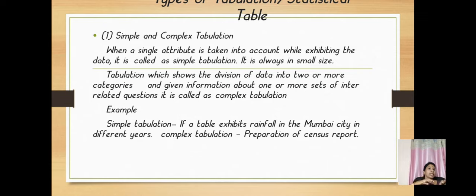Tabulation which shows the division of data into two or more categories and gives information about one or more set of interrelated questions is called as complex tabulation. Simple means it deals with a small size whereas complex contains two or more categories of information about one or more sets of interrelated questions. Example: simple tabulation - if a table exhibits rainfall in Mumbai city in different years. Complex tabulation - preparation of census report.